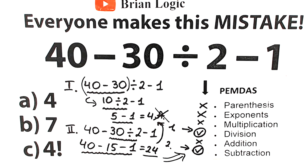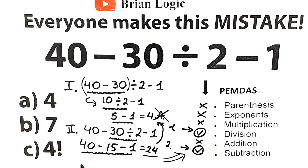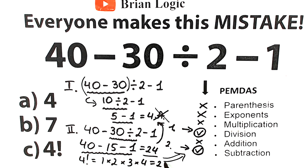This is a very tricky moment, because 24 doesn't appear directly as an option. For those who don't recognize it, look closely at option C — it's 4 factorial. From school you should know that 4 factorial equals 1 times 2 times 3 times 4. That gives 6 times 4, which equals 24. So the correct answer, according to this test, is option C.